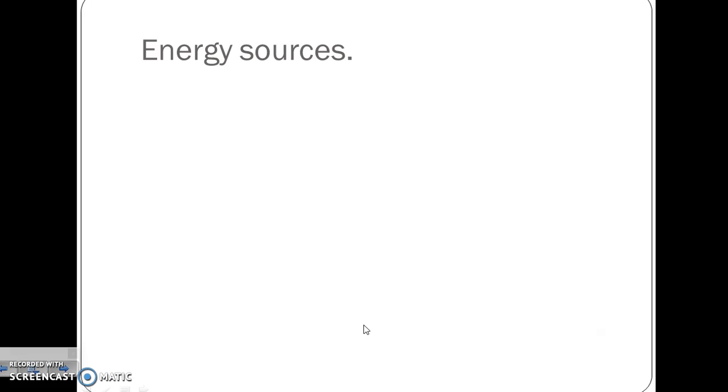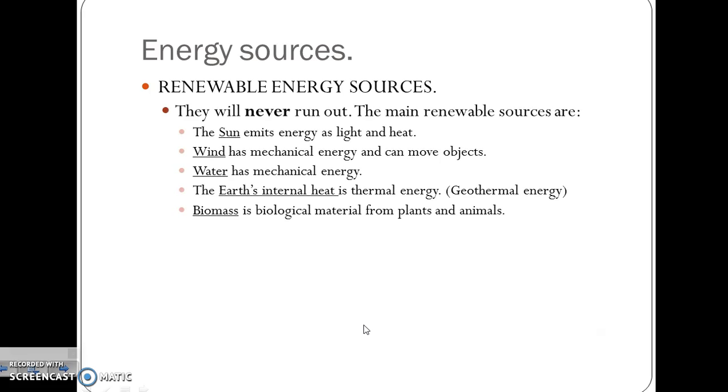And finally, we are going to talk about energy sources. There are two main energy sources: renewable energy sources. They will never run out. The main ones are: the Sun emits energy as light and heat; wind has mechanical energy and can move objects; the same as water, it also has mechanical energy; the Earth's internal heat is thermal energy, what we call geothermal energy; and finally, biomass is biological material from plants and animals.